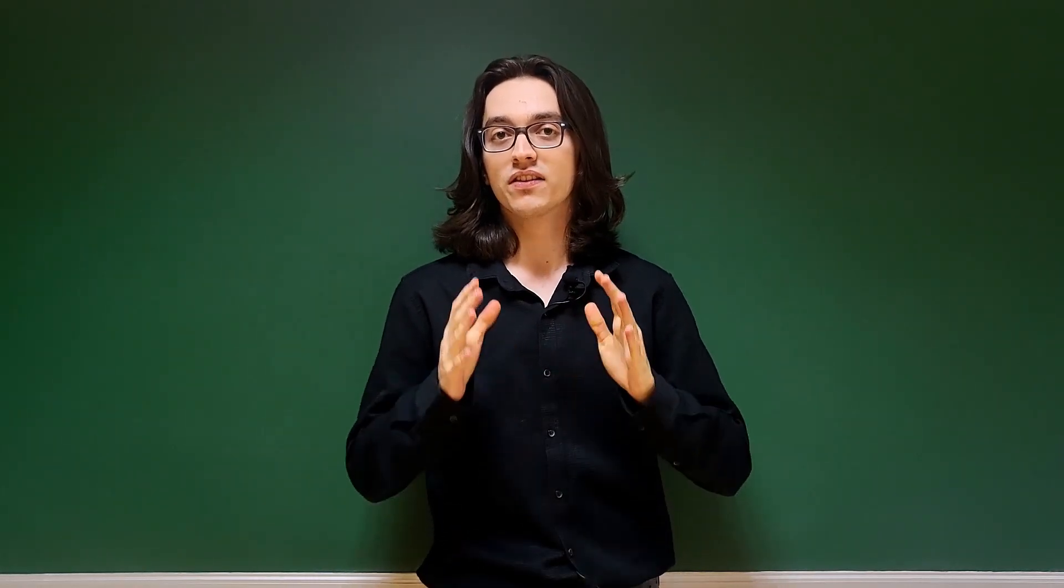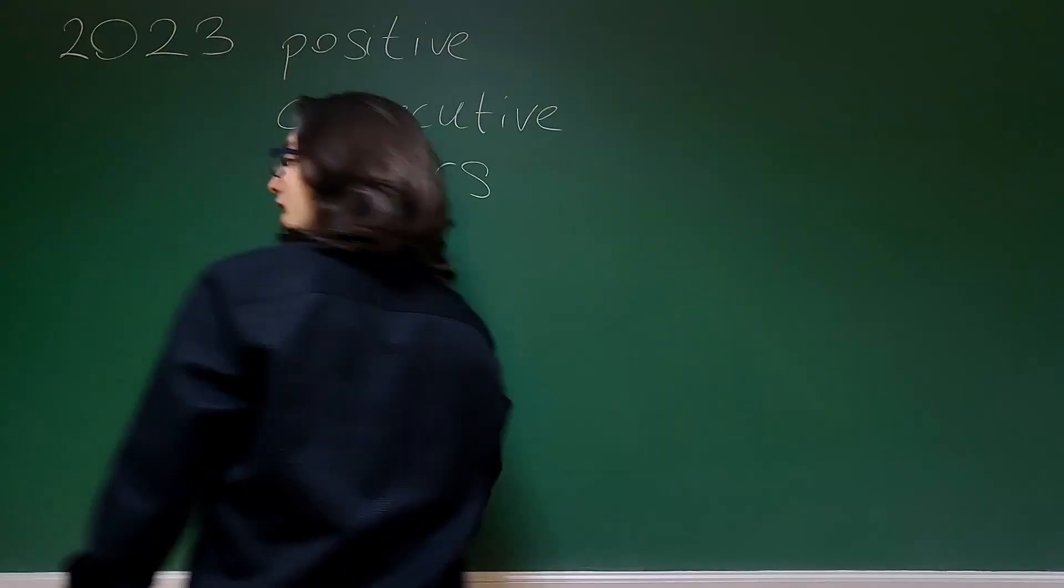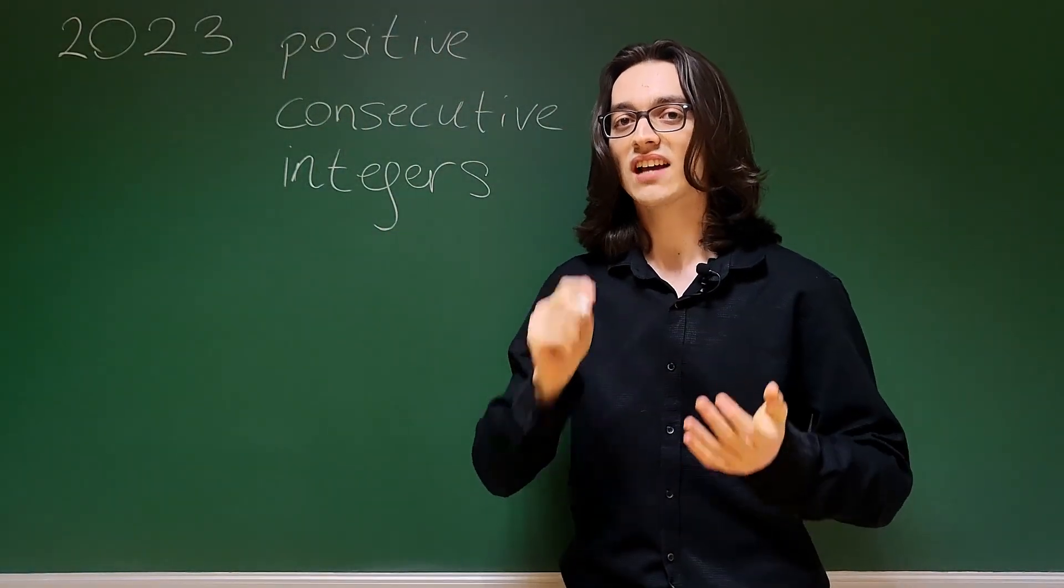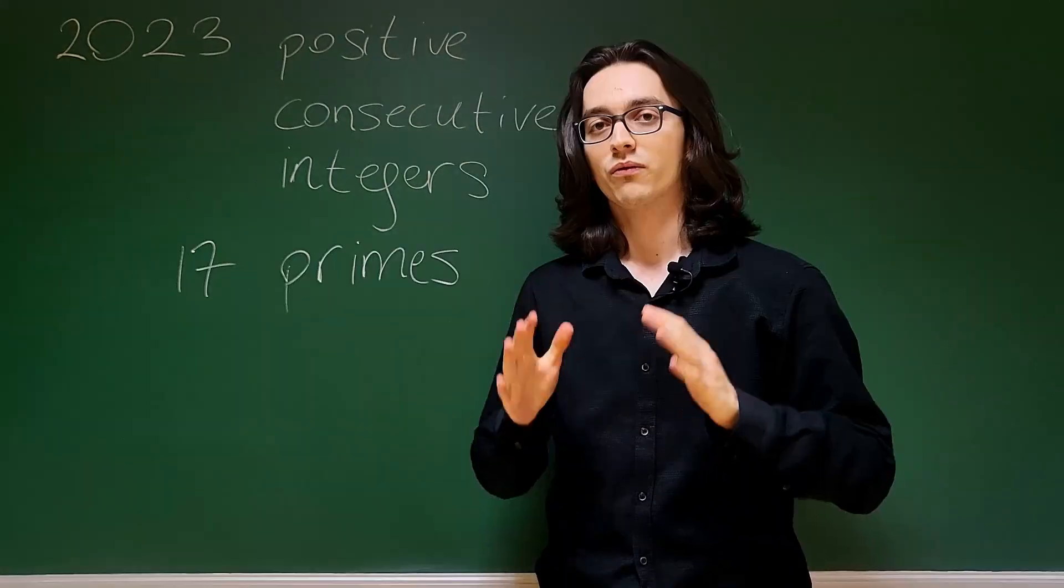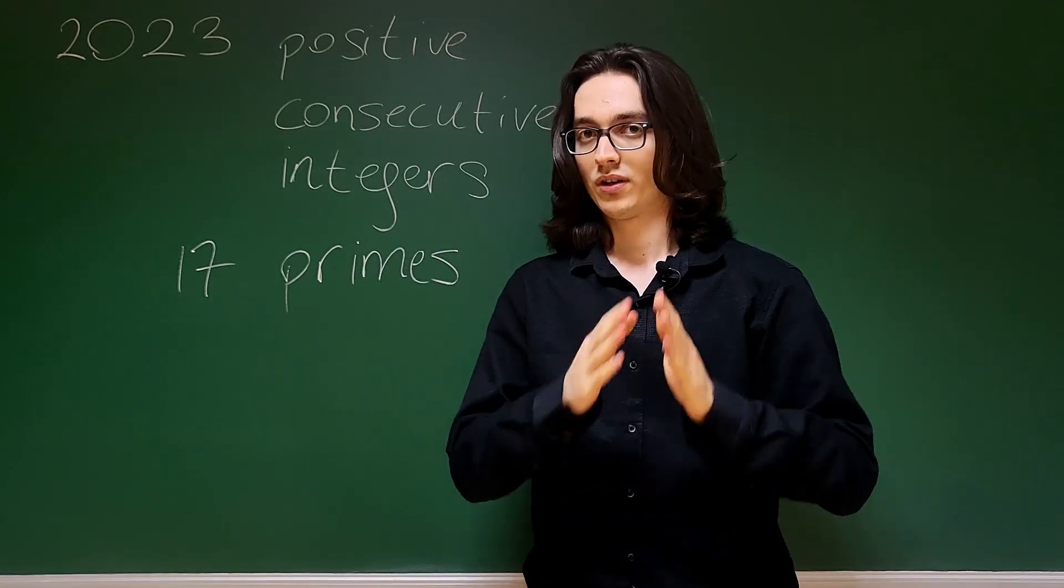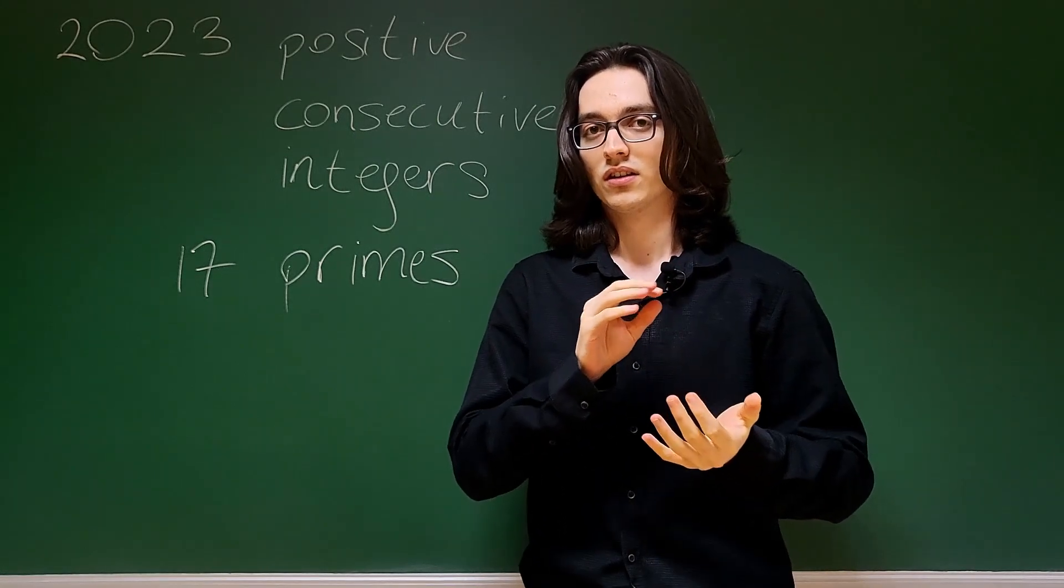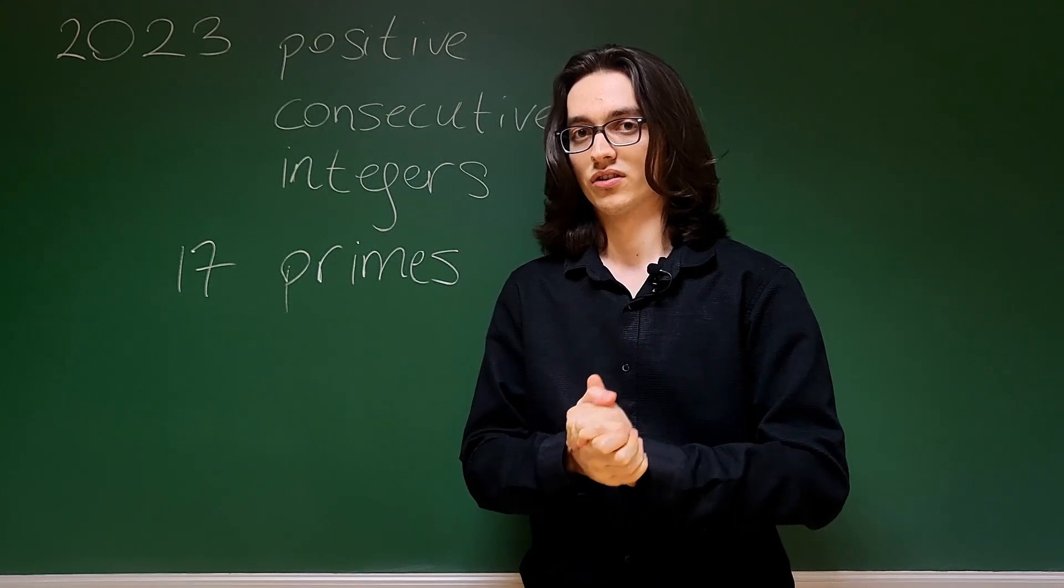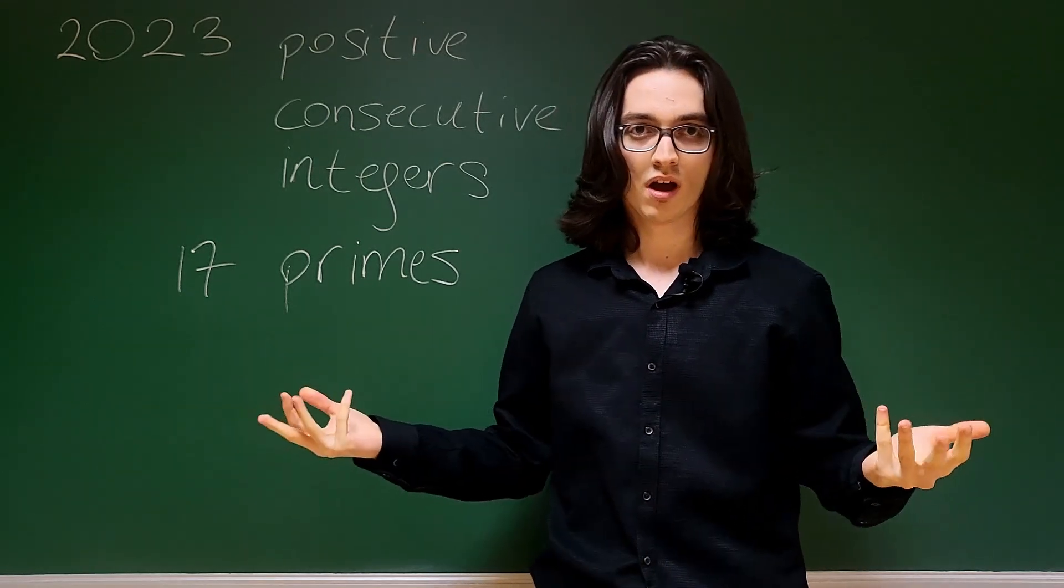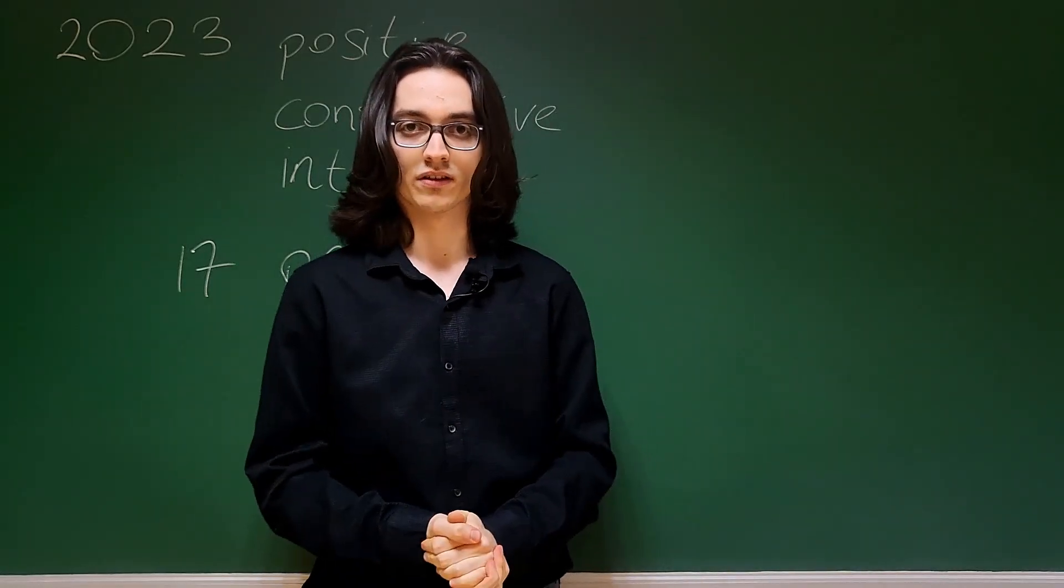The question asks us to find 2023 consecutive positive integers, and among those integers we want to have exactly 17 primes. We are asked to prove that this is possible - there is at least one set of 2023 positive consecutive integers that have exactly 17 primes in it. So how can we approach a problem like this?